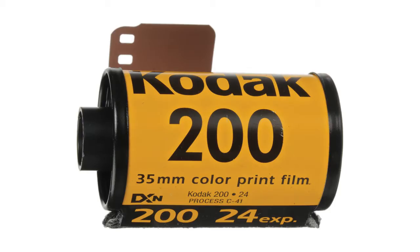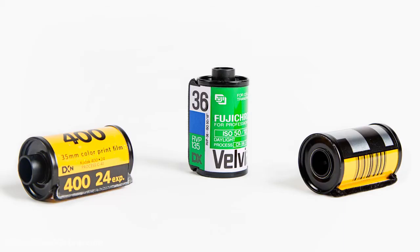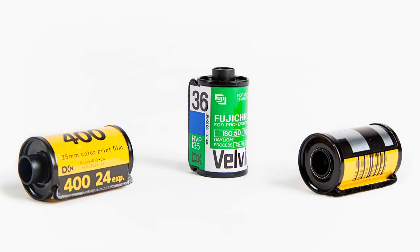The ISO has changed over the years. What it was once for film has, in a way, translated into digital, but slightly differently. The ISO, or ASA, became a rating system to indicate how sensitive a piece of film was.